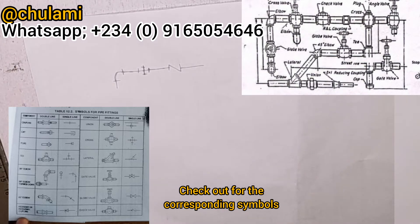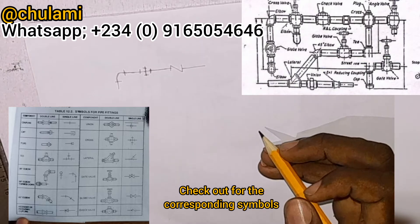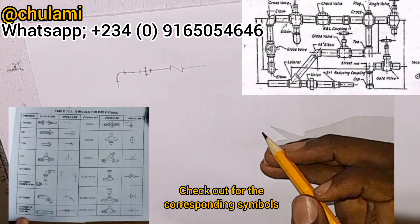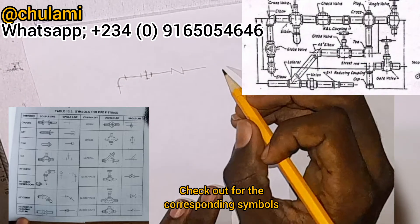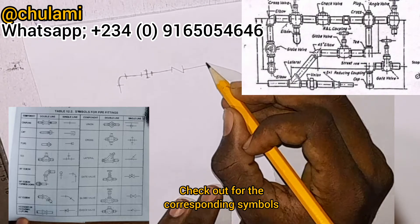After the check valve, you then have a coupling, and the symbol for coupling is drawn like this.